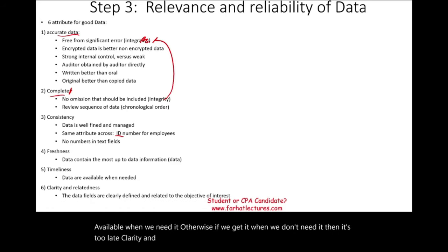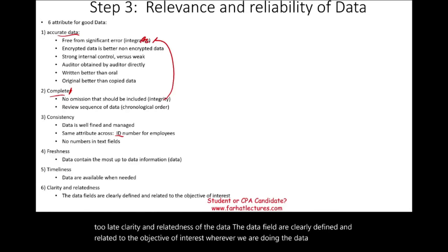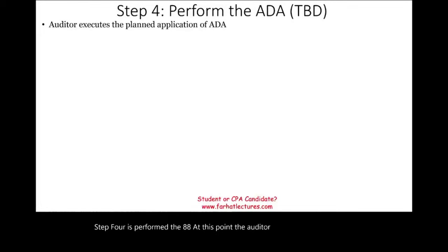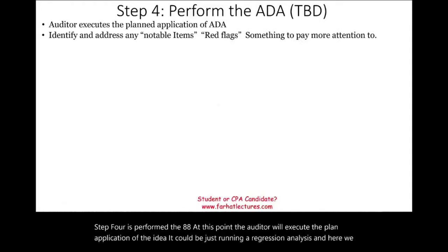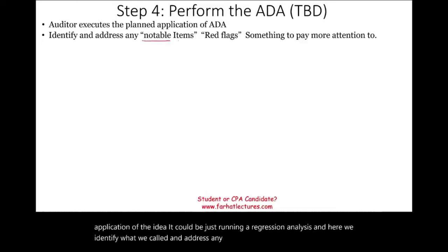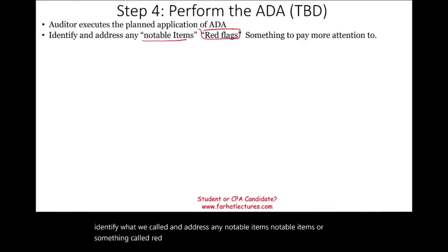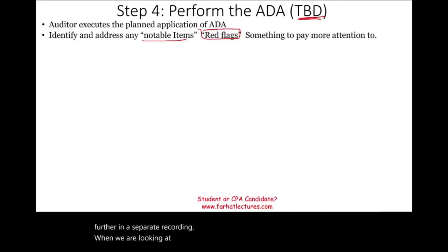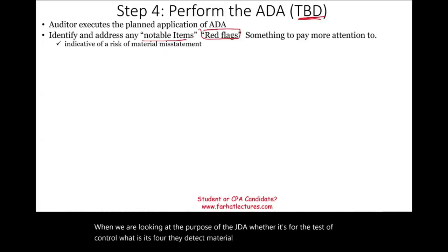Six: clarity and relatedness — data fields are clearly defined and related to the objective of interest; whatever we are doing, the data is helping us achieve that purpose. Step four: perform the ADA. At this point the auditor executes the planned application of the ADA — for example, running a regression analysis. Here we identify and address notable items, which are red flags or things to pay more attention to.